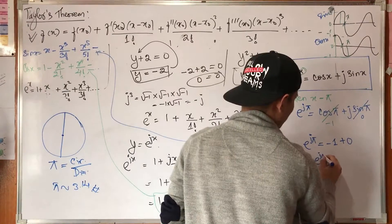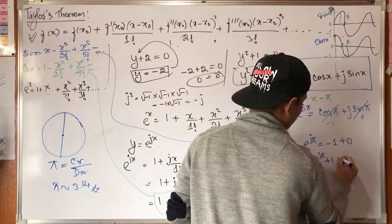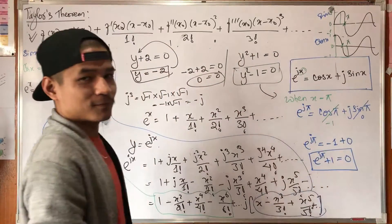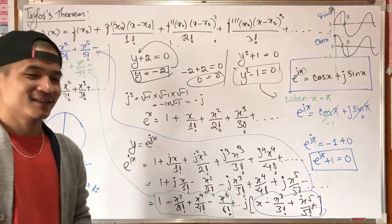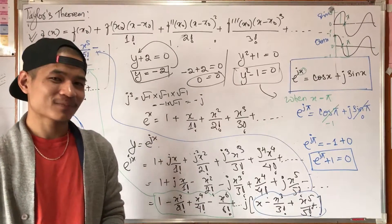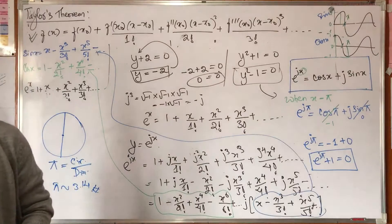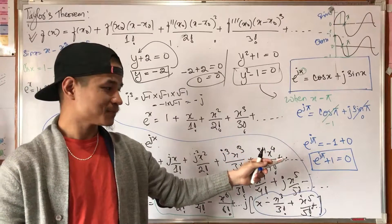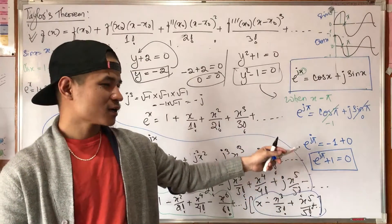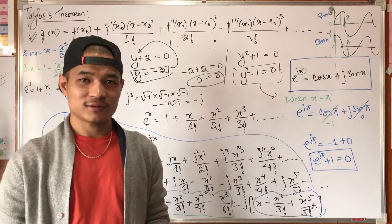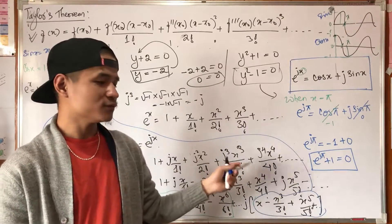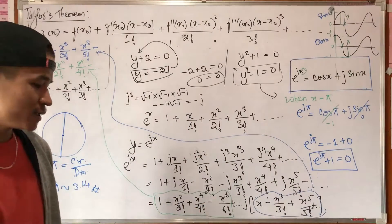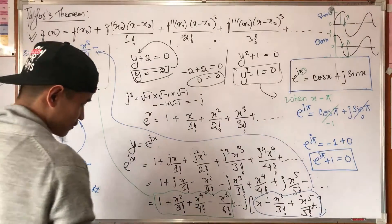Therefore, e to the power j pi plus 1 equals zero. This is Euler's identity, also called Euler's equation — one of the most beautiful equations in mathematics, relating e, j, and pi.